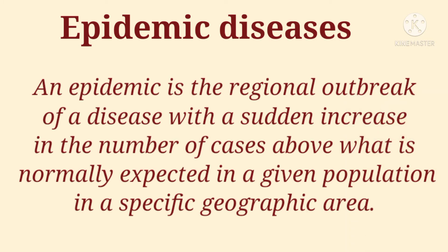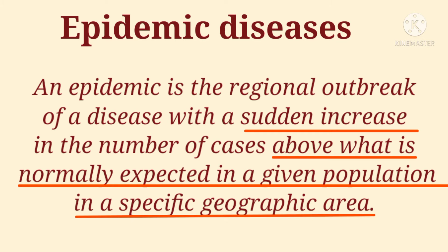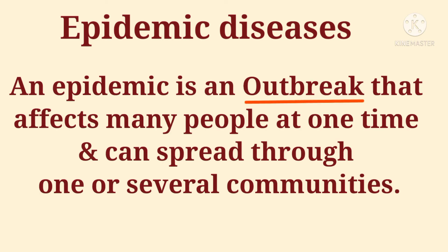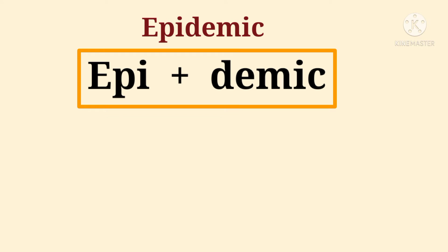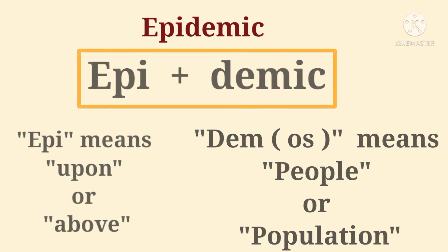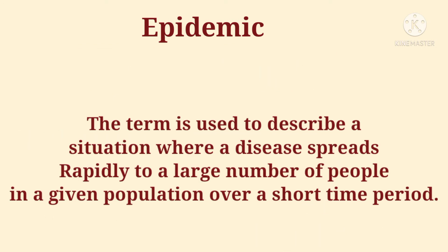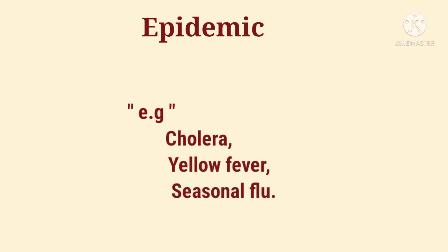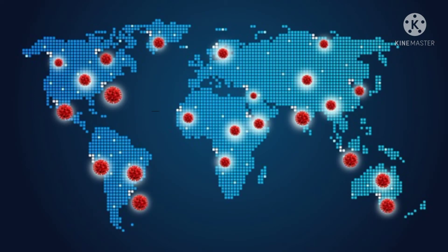An epidemic is the regional outbreak of a disease with a sudden increase in the number of cases above what is normally expected in a given population in a specific geographic area. An epidemic is an outbreak that affects many people at one time and can spread through one or several communities. The word epidemic is derived from Greek — 'epi' means 'upon or above' and 'demos' means 'people.' It describes a situation where a disease spreads rapidly to a large number of people in a given population over a short time period. Examples are cholera, yellow fever, and seasonal flu.